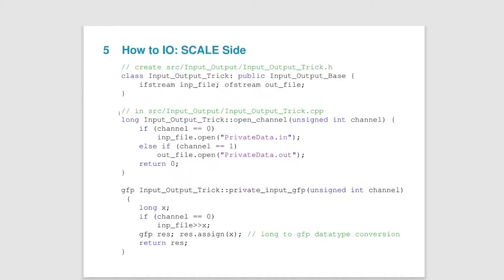On the C++ side, what we want to do is create our own input/output class which has to be derived from the input/output base class which is already defined. We then want to implement all the commands we have called in Mamba. The first one is what happens when we call open_channel in Mamba — this function takes in a channel number and, depending on which channel number you give it, opens either the input file or the output file.